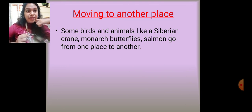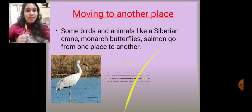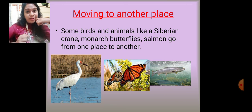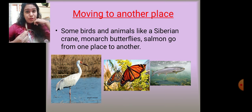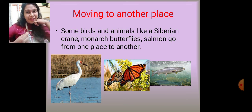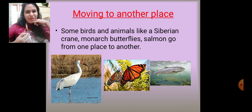Some animals move from one place to another — like the Siberian crane, the monarch butterfly, and the salmon. Siberian cranes live in Siberia, a very cold place, and in winter there is a lack of food, so they move elsewhere. Similarly, the monarch butterfly and the salmon also move from one place to another and do not like staying in the same place for too long.